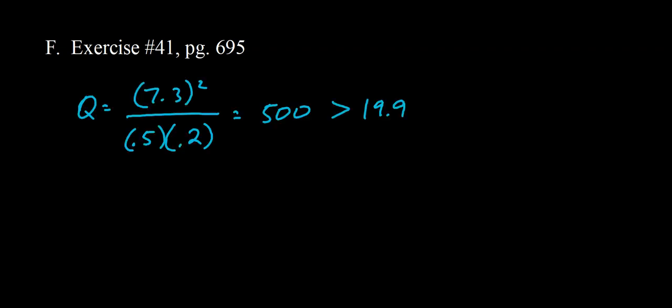All right, so here's what we get. I guess we have one sig fig in our answer for Q, so it's about 500. The Q is much bigger than the KC that's given to us in the problem. So in order for equilibrium to be reached, this needs to go down, this needs to go up. So we need to decrease the amount of reactants, increase the amount of products. That means we have to advance in the reverse direction.